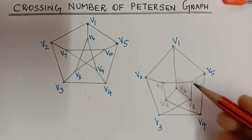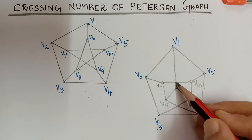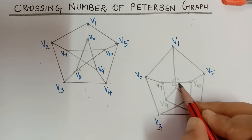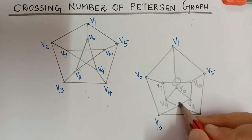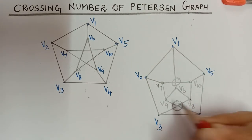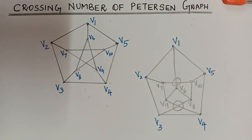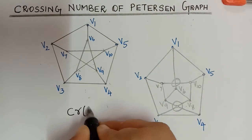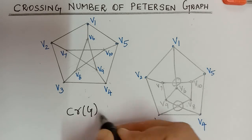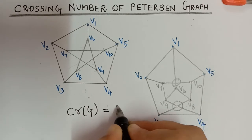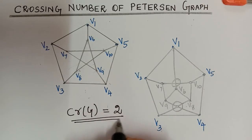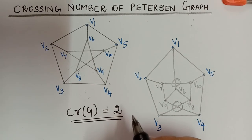After redrawing the Petersen graph in a plane, we can see that it has exactly two crossings. Therefore, the crossing number of the Petersen graph is equal to 2. Hope you have understood this. Thank you.